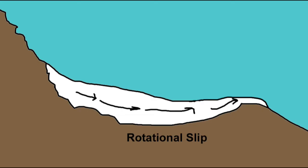As the ice gets heavier, it starts to melt, which lets the glacier start to move. This is called rotational slip.